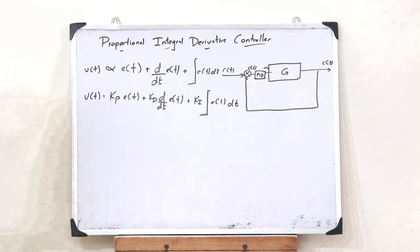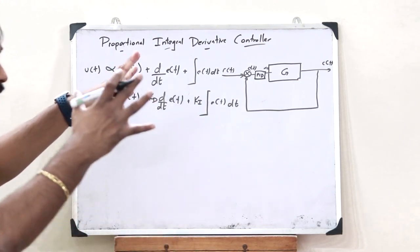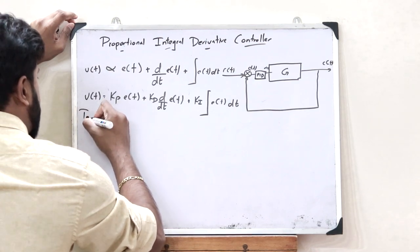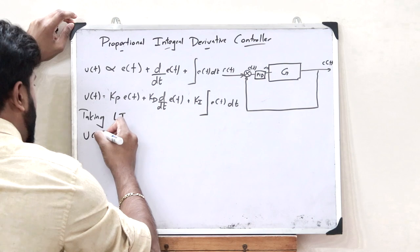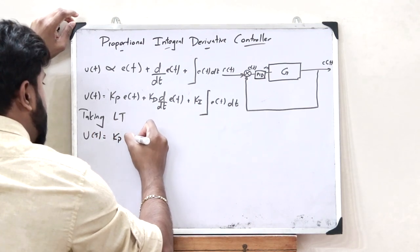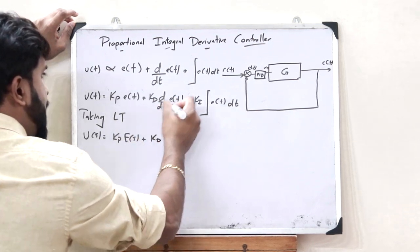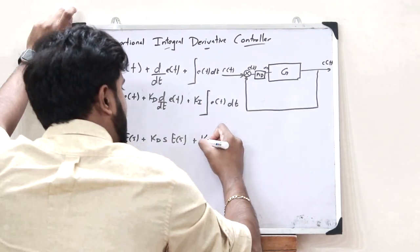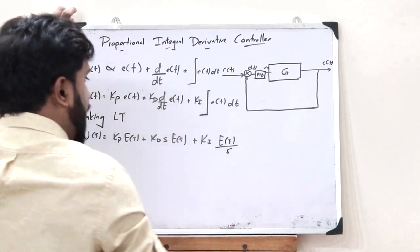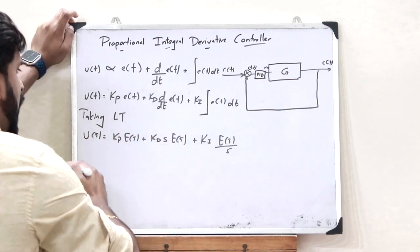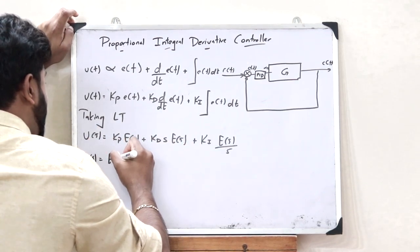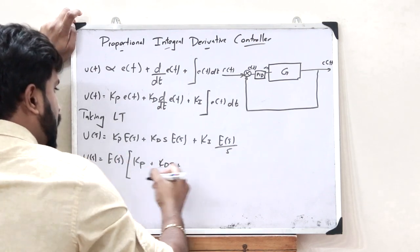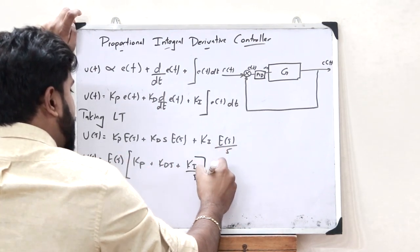Now, in order to find the transfer function, we take the Laplace transform of this equation. Taking the Laplace transform, we get U(s) = Kp·E(s) + Kd·s·E(s) + Ki·E(s)/s. Taking E(s) common outside, we get U(s) = E(s) multiplied by (Kp + Kd·s + Ki/s).